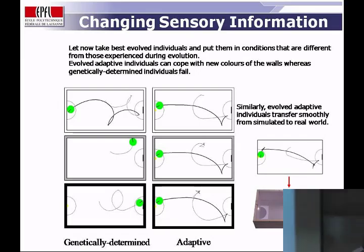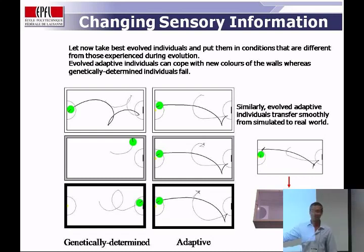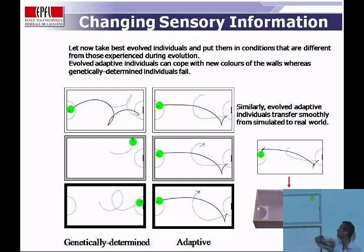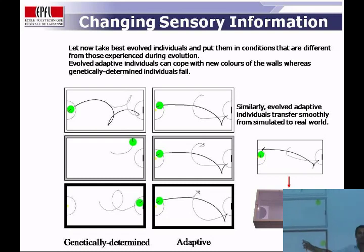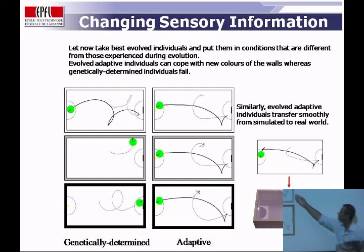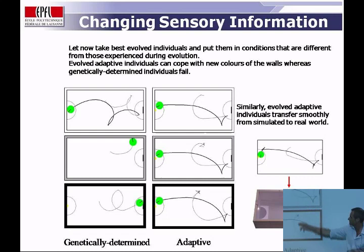To test whether these behaviors are really different, we change the environment. When we change the wall color for the robot evolved without learning, it hits the wall and cannot adapt — the sensory-motor coordination is broken. Changing the color again, it still fails. By contrast, the robot capable of learning during lifetime — no matter what the wall color is — still displays the same strategy and solves the task.